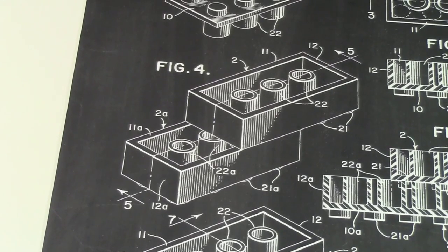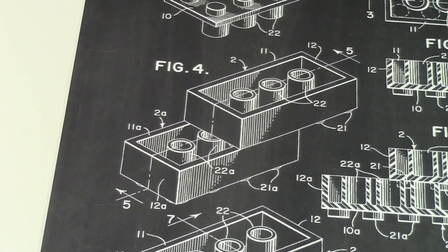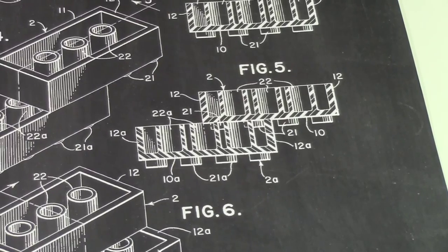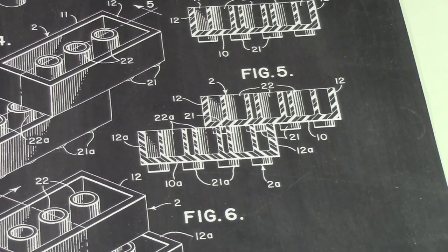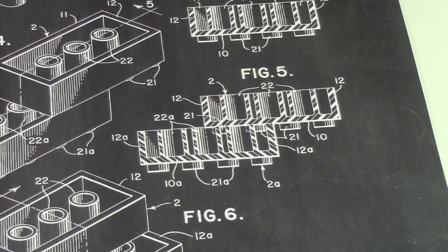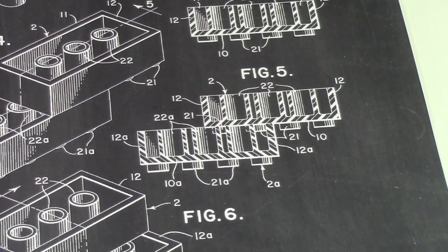Figure 4 has the two bricks put on top of each other to demonstrate the clutch power of them. Figure 5 is the exact same as Figure 4 except these bricks are on their sides. And again, the sides are like kind of half there just to show the clutch power and how the little tubes work.